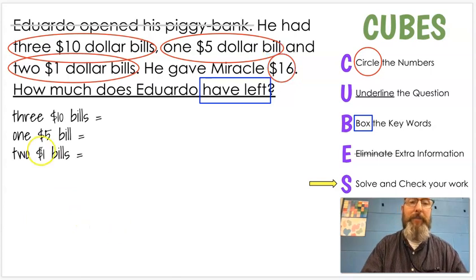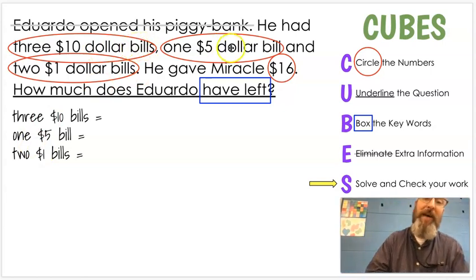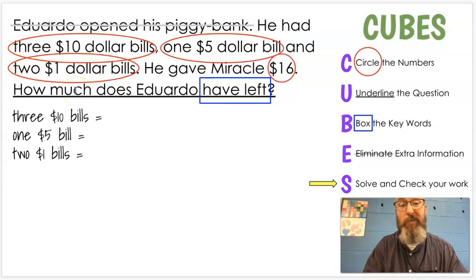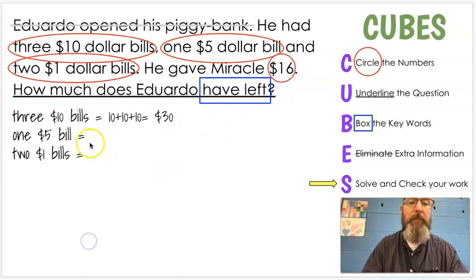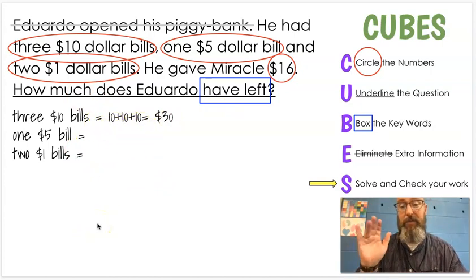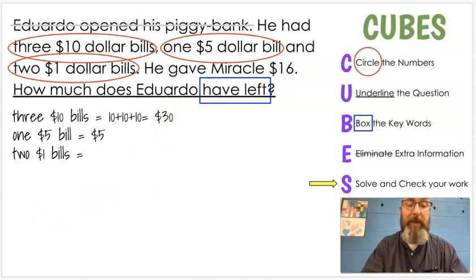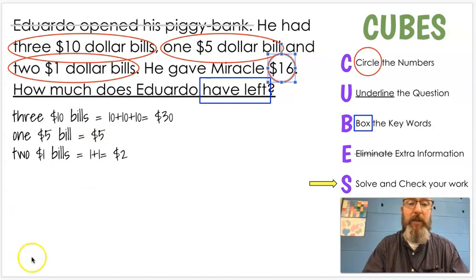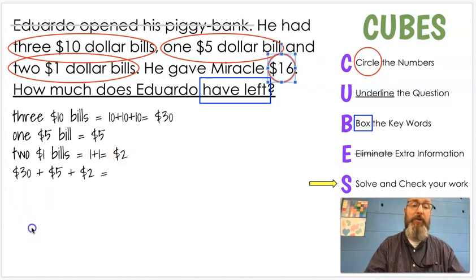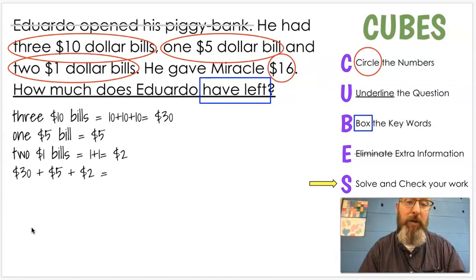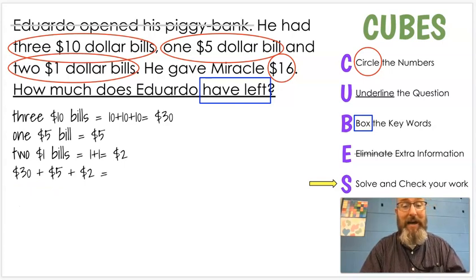Now it is time to solve and label our work. We know Eduardo had three $10 bills, one $5 bill, and two $1 bills. We need to know how much Eduardo has before we can give Miracle some money. Three $10 bills — counting by tens: 10, 20, 30. We have $30 there. One $5 bill is only worth $5. And two $1 bills — one plus one equals two. So 30 plus 5 would be 35, plus two more: 36, 37. So we know that he has $37.